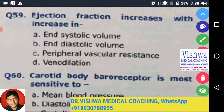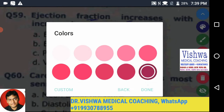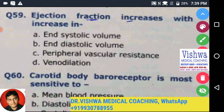Question 59: What does ejection fraction increase with? Remember, ejection fraction is the amount of blood ejected out of the ventricle in one beat — it's a ratio of how much blood was there before, which is the end diastolic volume. Now, ejection fraction increases with what? End systolic volume means how much blood remains in the ventricle after the stroke volume.